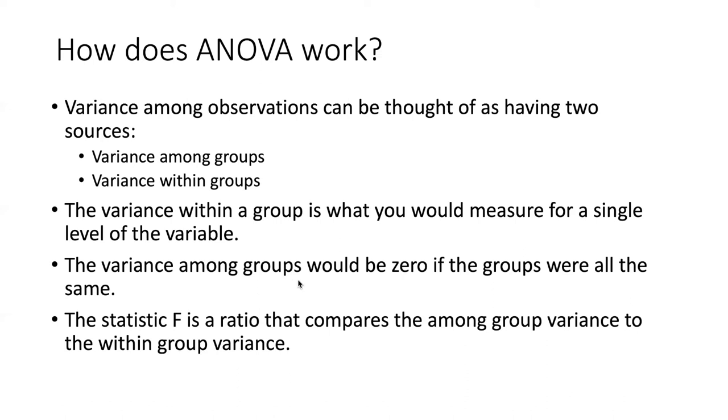If the data within the groups is really noisy, then the variation among the groups is going to have to be pretty big in order for us to detect the differences. However, if the data that we have for red light falls within a very narrow range and for blue light falls within a very narrow range, but the difference between red and blue is large, then it's going to be easy for us to see the difference between those different colors of light.